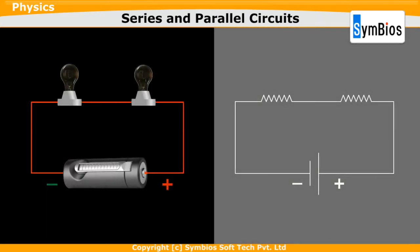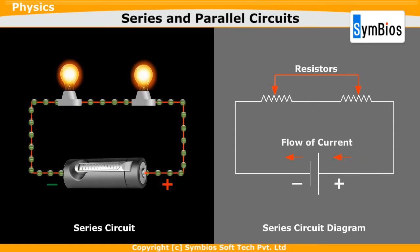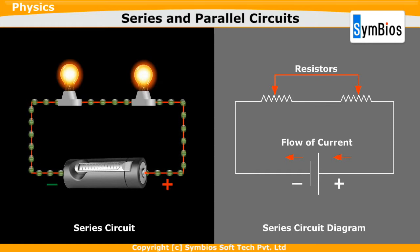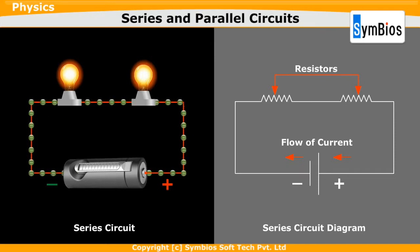A series circuit is a circuit in which resistors are connected lengthwise, so the current has only one path to take. This is a series circuit with two bulbs. In a series circuit, there is only one path for the flow of current.